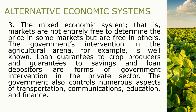The last type of economic system is the mixed economic system, wherein markets are not entirely free to determine prices in some sectors but are free in others. For example, government intervention in the agriculture arena includes loan guarantees to crop producers and guarantees to savings and loan depositors. The government also controls numerous aspects of transportation, communication, education, and finance. So these are the three types of economic systems: capitalism, socialism and communism, and the mixed economic system.